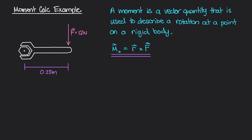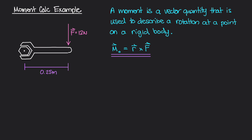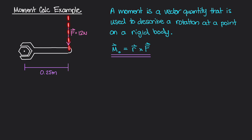This diagram is of a wrench trying to turn a bolt. The bolt is into the page, and the wrench is going to turn one way or the other. This force has a line of action, and the position vector R goes from the bolt all the way to that line of action. These two vectors are perpendicular to each other.